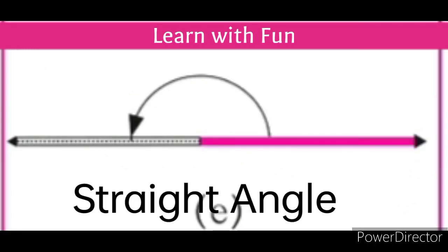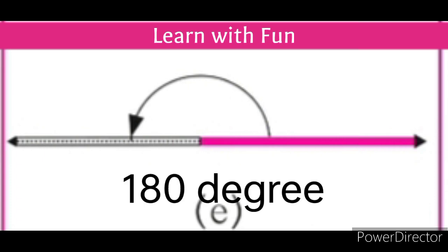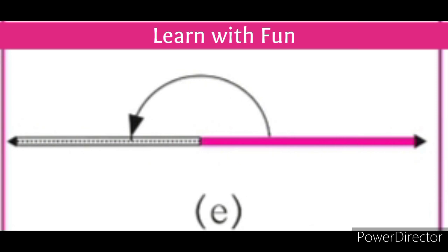The next type is straight angle. An angle whose measure is exactly 180 degrees is called a straight angle. In the given figure, the measure of the angle is 180 degrees and it is a straight angle. The direction is also mentioned with an arrow. So, this is called a straight angle.